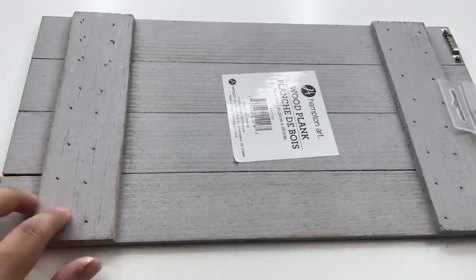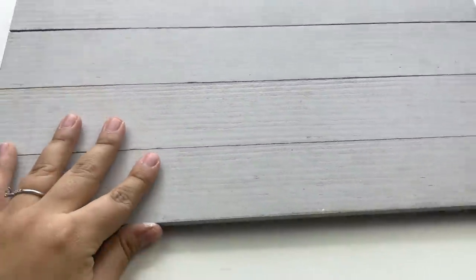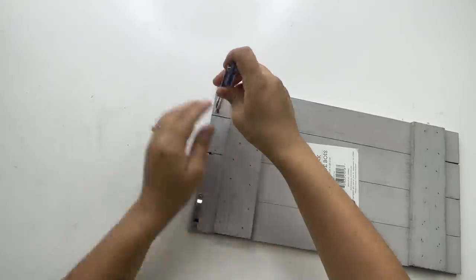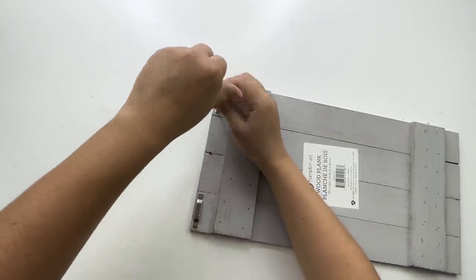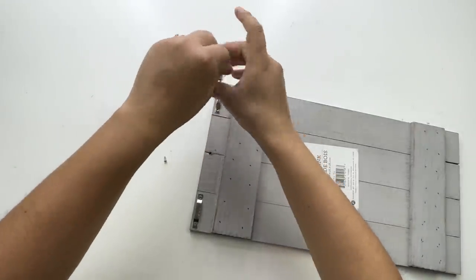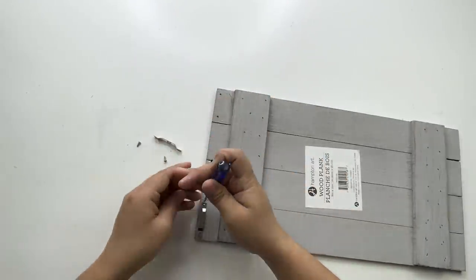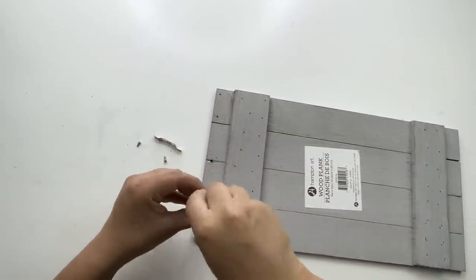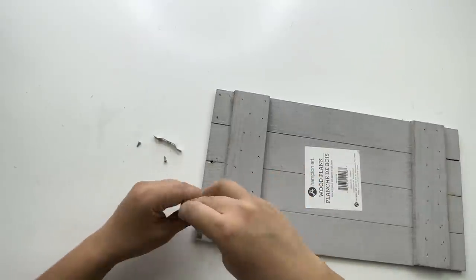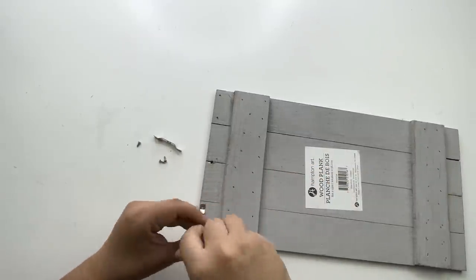For my next project, I will be using this Walmart wood plank sign, which was $6.68. Dollar Tree does carry signs that you can use instead. I decided to use this because it's already colored gray, so I didn't have to paint anything, plus it goes well with the rest of my DIYs.